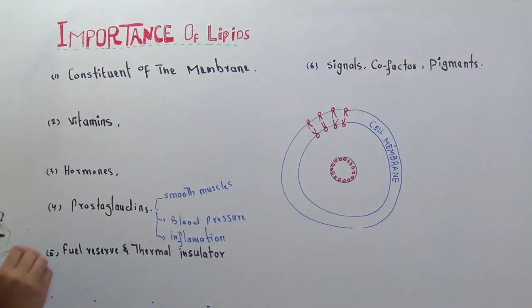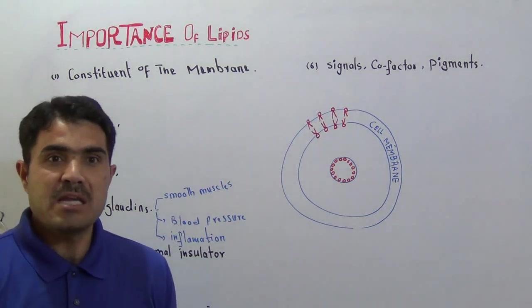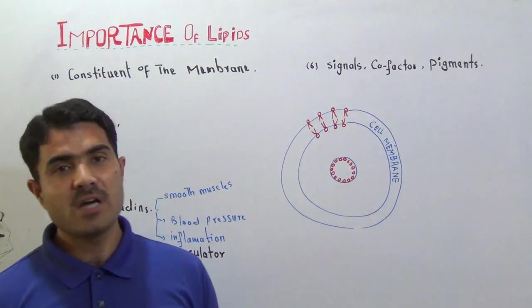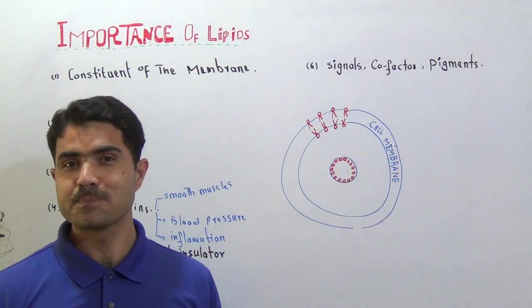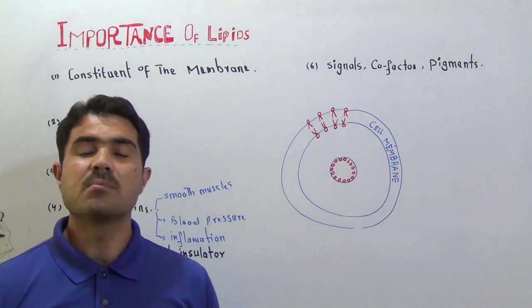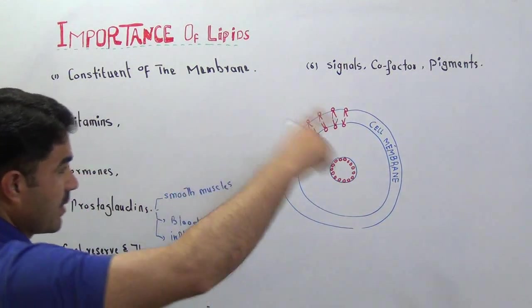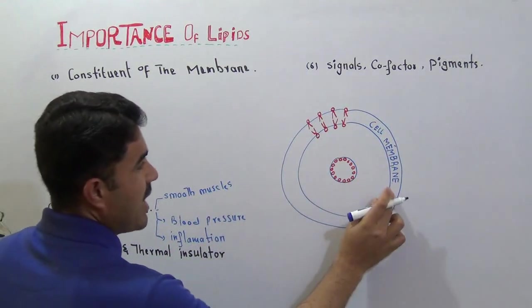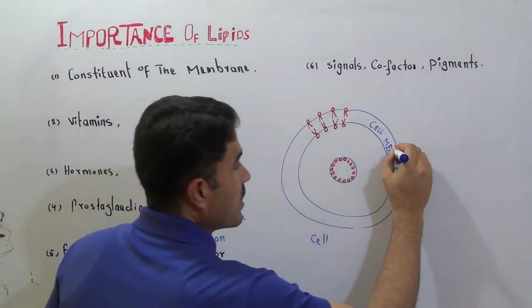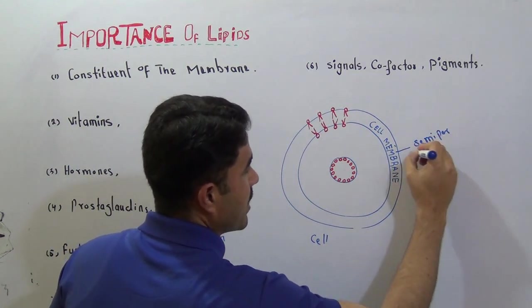The very first point is the lipid serves as a main constituent of the cell membrane. If we use the word biological membrane, then it will be more appropriate because the biological membrane is present in the cell membrane, in the mitochondrial membrane, and even in the nuclear membrane. Let's see how the lipid helps in the cell membrane. We know that this is a cell, and this is the cell membrane.